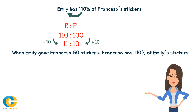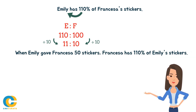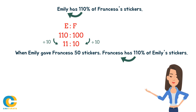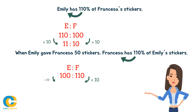Now we move on to the second sentence. When Emily gave Francesca 50 stickers, Francesca had 110% of Emily's stickers. This means that Francesca has 110% while Emily has 100%. So by expressing this information as a ratio in simplest form, we now see that the ratio of Emily's stickers to Francesca's is 10 to 11.